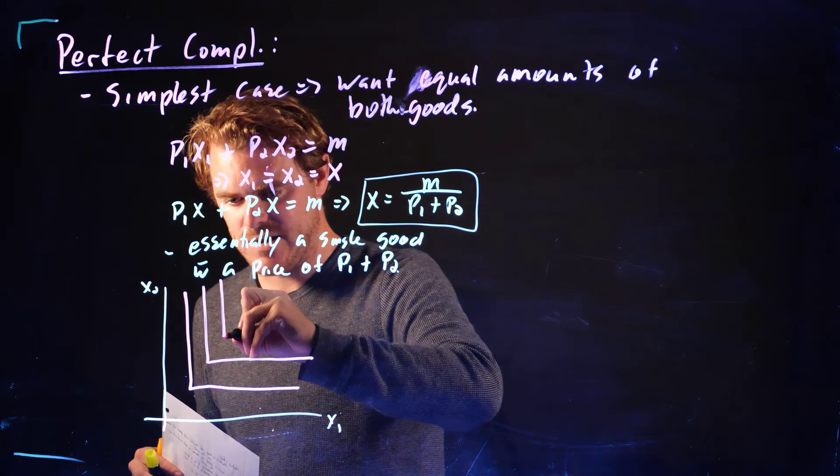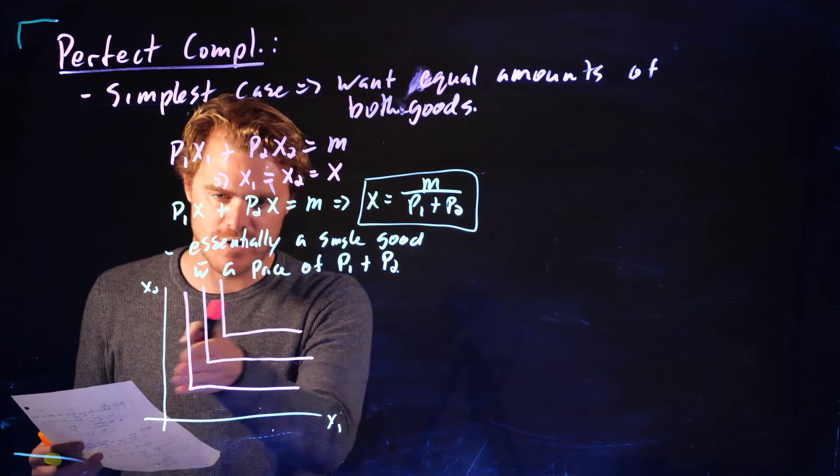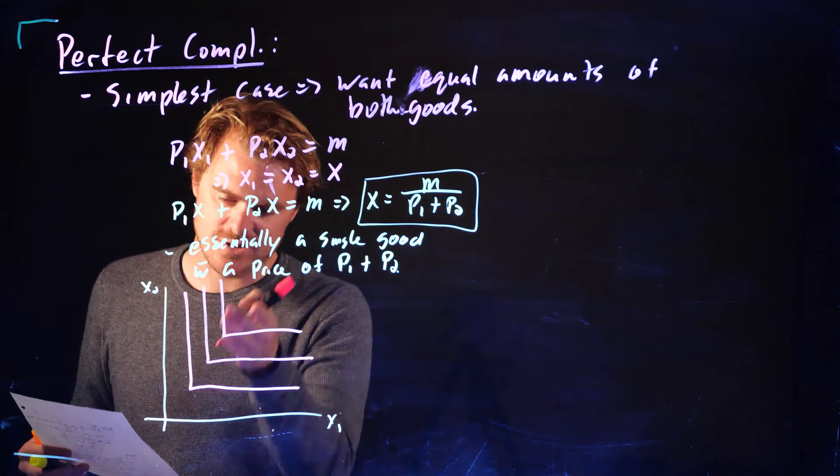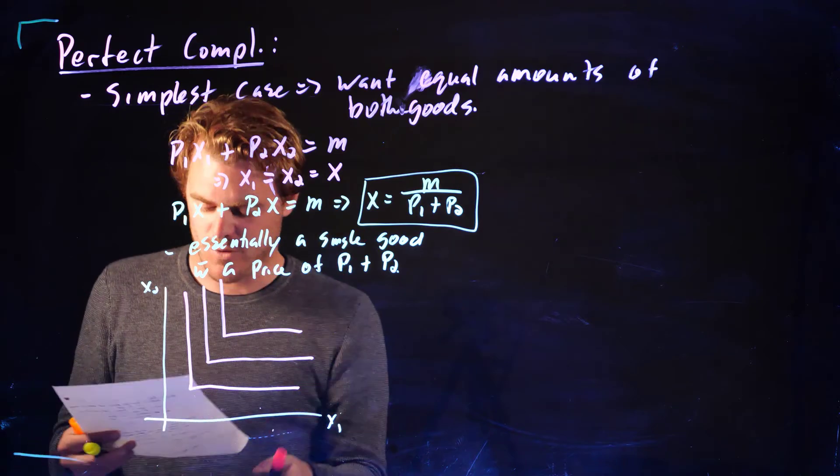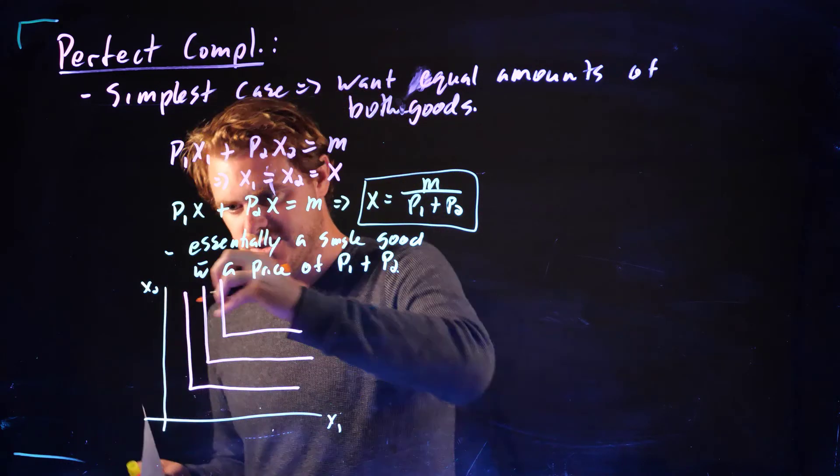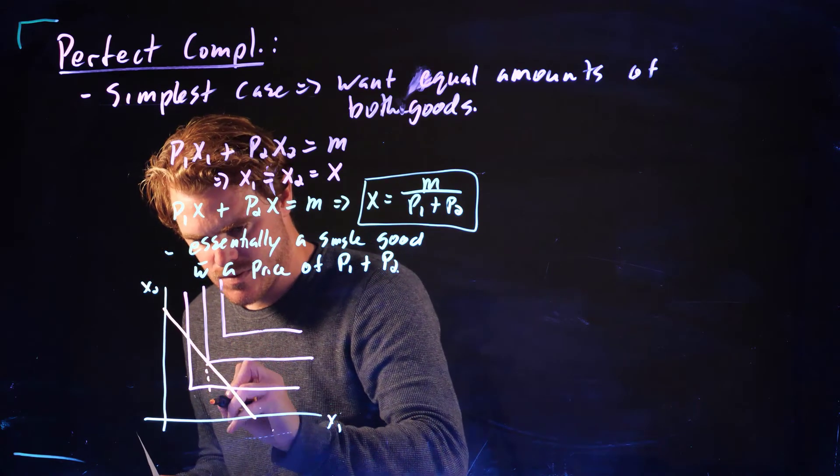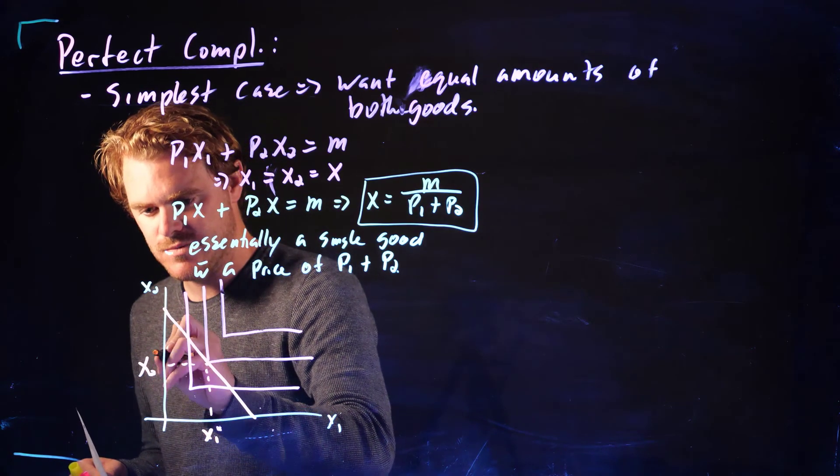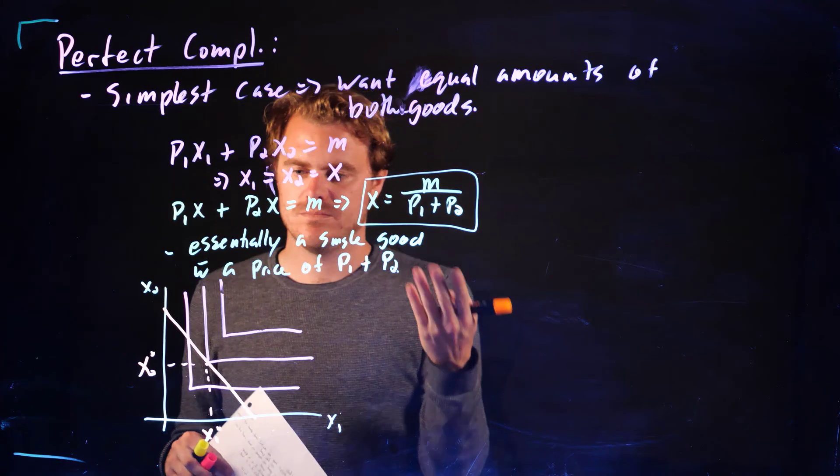Where that kink is at 1, 1, 2, 2, 3, 3, or whatever, the equal number on the X and Y axis. These kinks are along the X equals Y kind of locus coming out of the origin here. And so essentially, this is the amount of X1, and this is the amount of X2. So that's how perfect complements work.